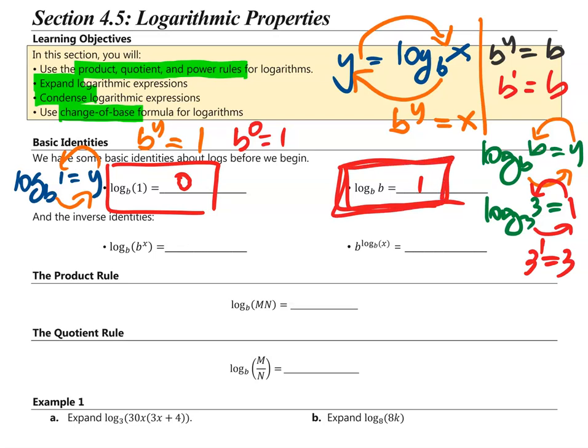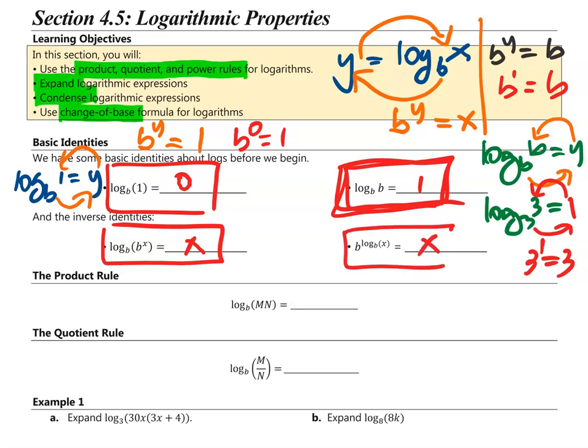The inverse identities: log base b of b to the power of x is equal to x. And b to the power of log base b of x is also equal to x.